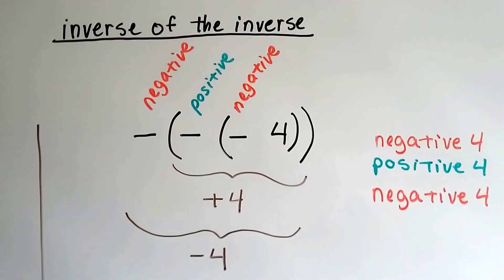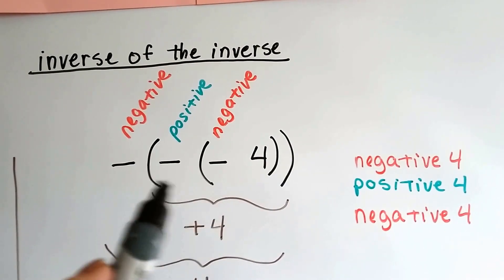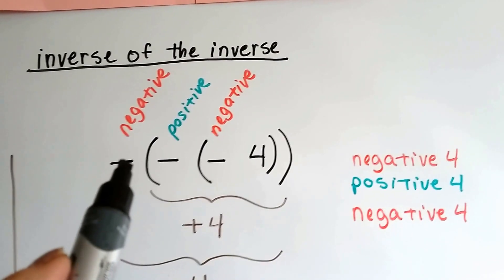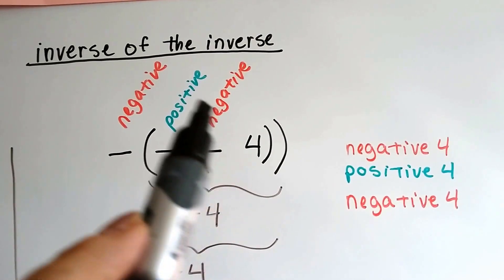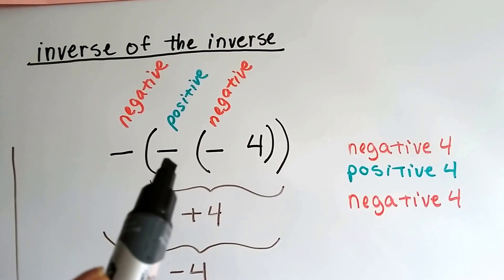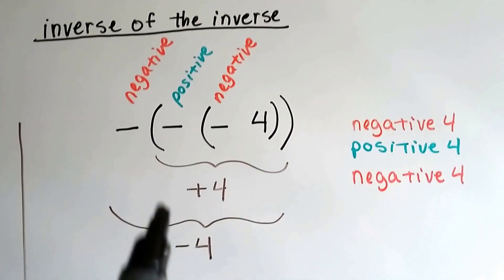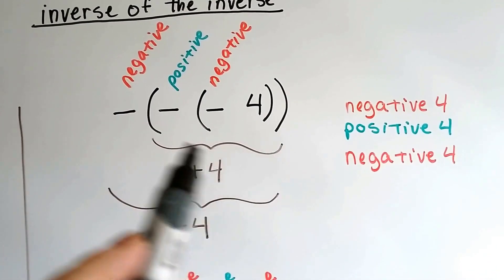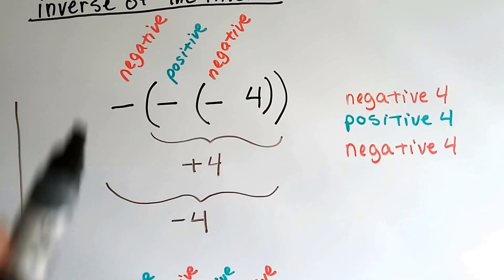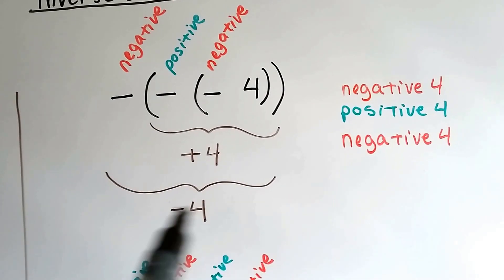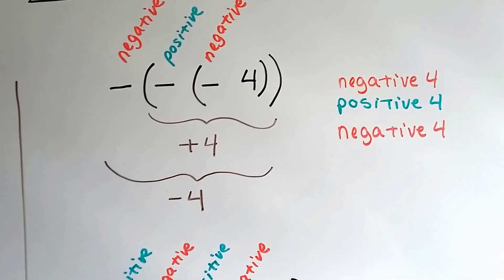If we've got the inverse of the inverse and we have three negative signs, we go from negative 4 — adding another negative sign takes us to positive 4, and adding yet another negative sign takes us back to negative 4. This is the inverse of the inverse, so that gives us positive 4; but adding the last negative sign brings us back to negative 4. So we went: negative 4, back to positive 4, back to negative 4.